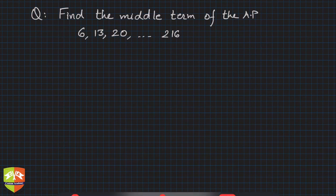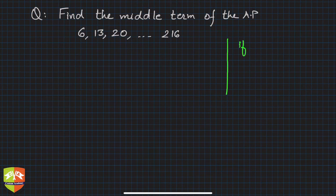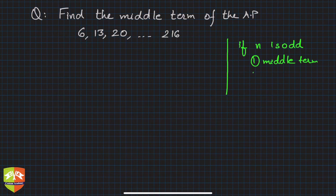Just a quick recap of what we have learned about middle term. If n, the number of terms, is odd, then there is only one middle term, which is term number (n+1)/2. This is the middle term if n is odd.